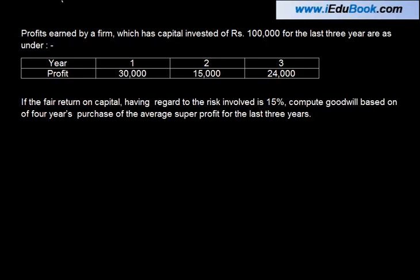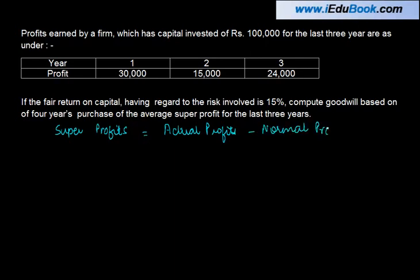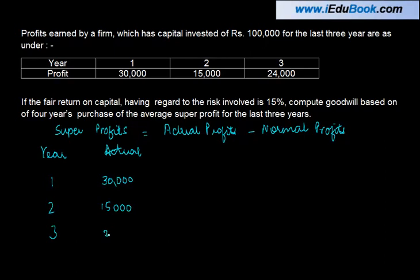Super profits are equal to the actual profits made by the company minus normal profit expected. The actual profits made by the company for years 1, 2, 3 were 30,000, 15,000 and 24,000.